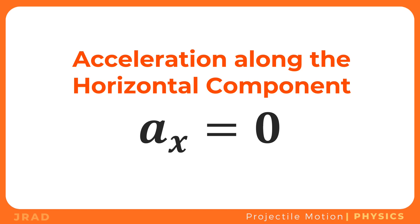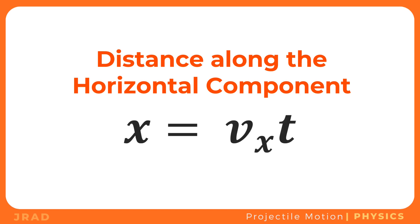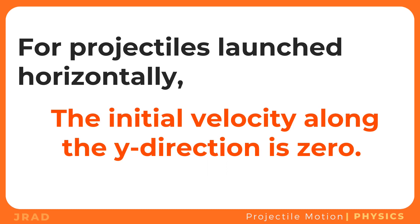Similar to any object moving in a straight line, the distance covered — or the range of the projectile — is equivalent to x equals vx times t. For projectiles launched horizontally, an object thrown horizontally has a vertical motion similar to an object dropped from rest, so its initial velocity along the y-direction is zero.